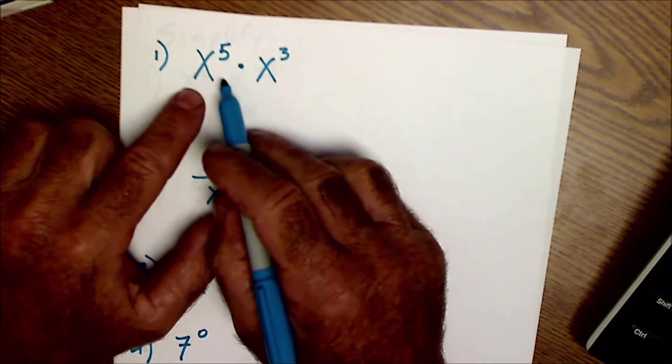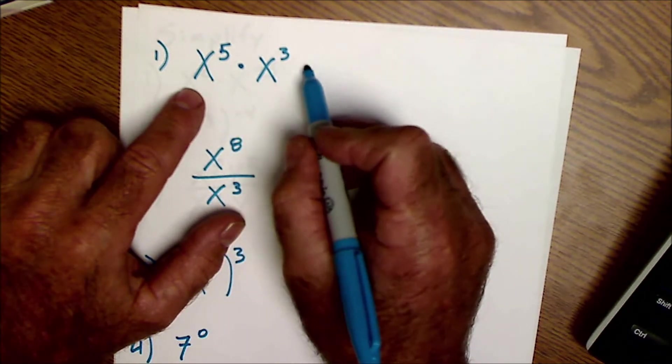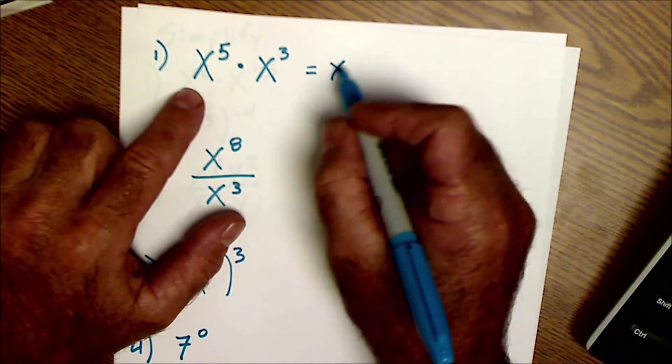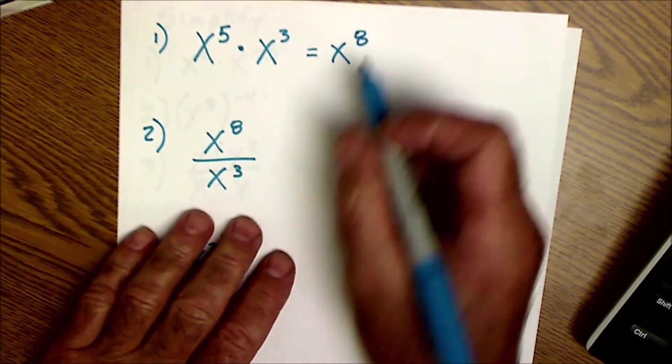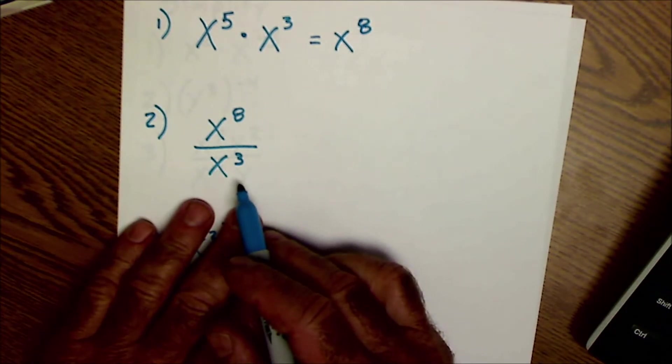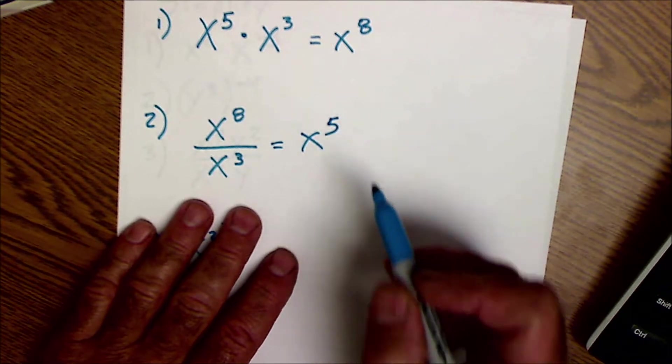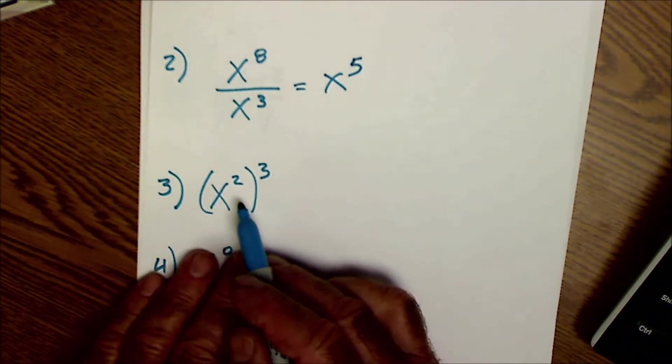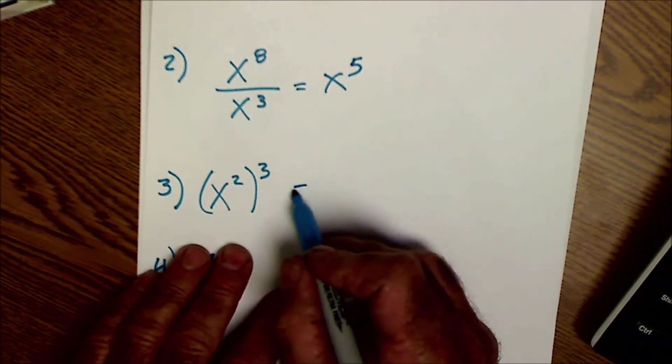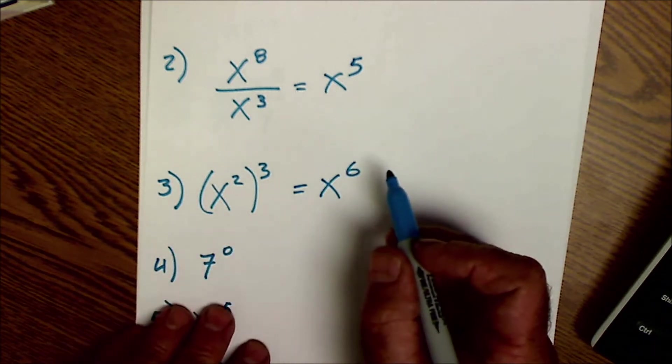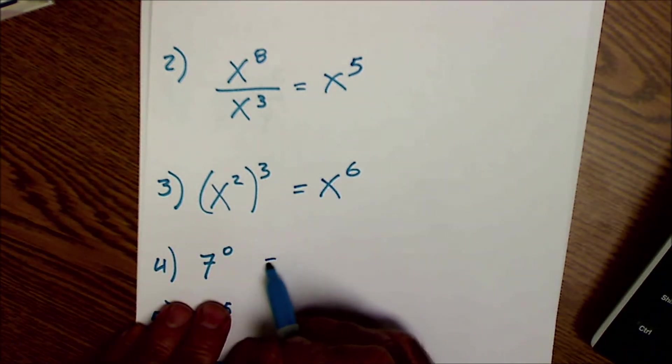Okay, hopefully you did this first. I'm just multiplying together, so I just add those exponents to get x to the eighth. Here you're going to subtract them. 8 minus 3 is 5. Here you're going to multiply them. Make sure you do these before I do. 8 to the sixth. Anything to the zero power is equal to 1.